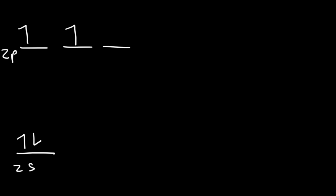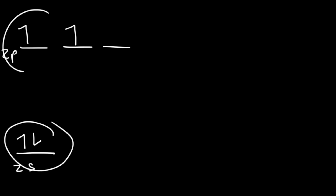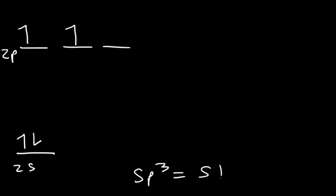Carbon has four valence electrons. When carbon forms an sp3 hybrid orbital, it uses all four orbitals. Keep in mind sp3 means we need to mix one s with three p orbitals. So where should we put the sp3 orbitals — at the same energy level as the 2s orbital, the 2p orbital, or somewhere in between? Should it be halfway closer to 2s or closer to 2p?